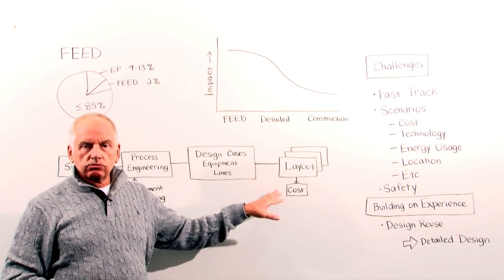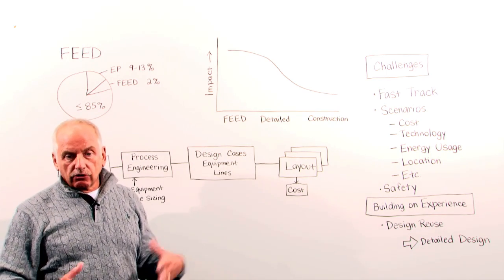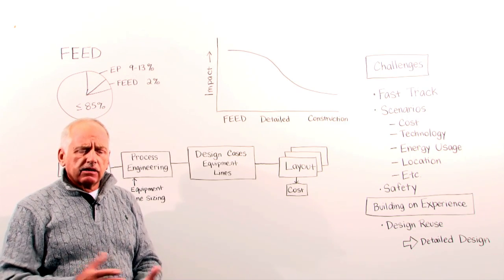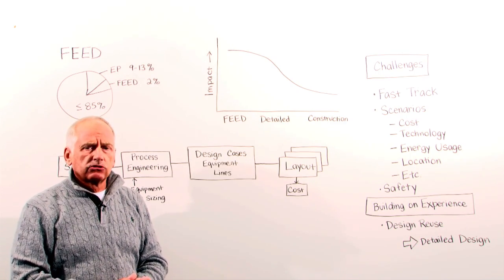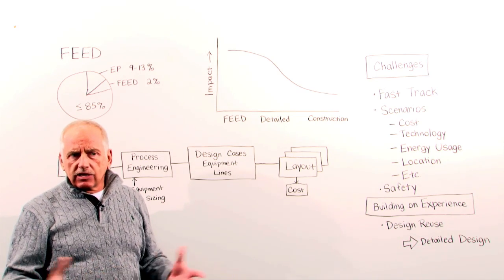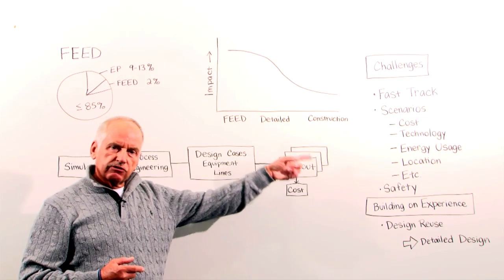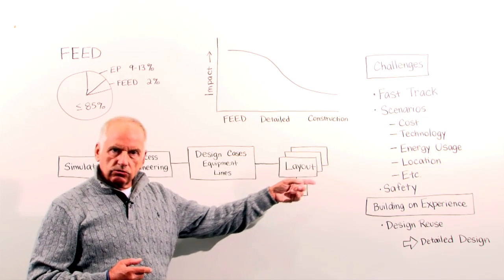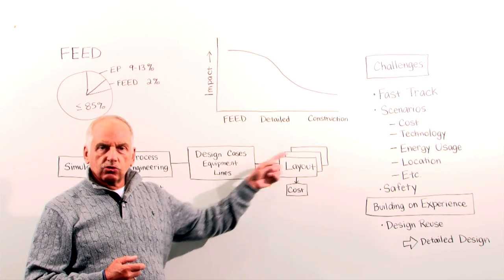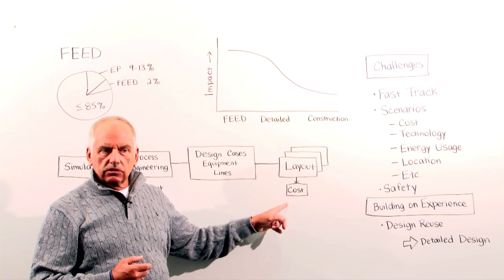Then you move it into the layout. A very important part of front-end engineering is how you lay out your plant. There are many variables that decide how you lay out your plant—could be the location, how much space you have available, and so on. What happens is you make different scenarios because a little bit longer pipe rack or a little bit shorter pipe rack has a major impact on the cost.